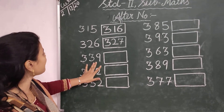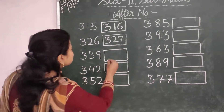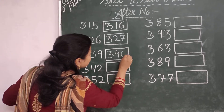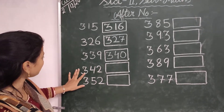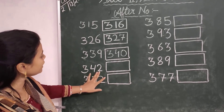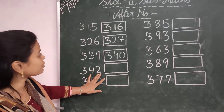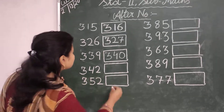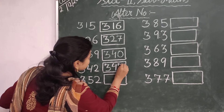Then the next number is 342. Here 42. The number that comes after 42 is 43. So the number that comes after 342 is 343.